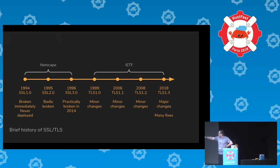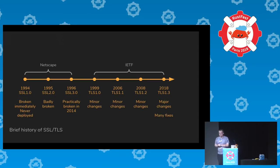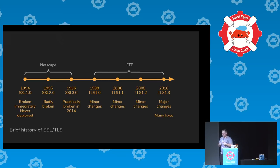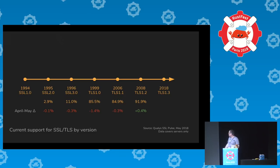SSL3 through TLS 1.2 can be thought of as the same family of protocols. TLS 1.3 is very different — far more different than, say, 1.1 to 1.2. There was debate in the TLS working group about whether it should be called TLS 2.0, but TLS 1.3 won out because it had already been used in security papers proving its security.